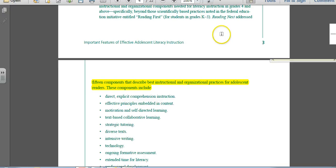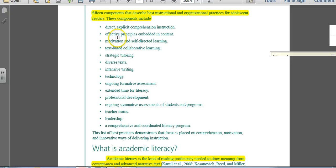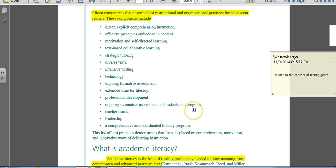Reading Next was a publication that was put out that addressed 15 components for instructional organization and practices for adolescent readers. These components included direct, explicit, and comprehension instruction, effective principles embedded in content, motivation and self-directed learning, text-based cooperative learning, strategic tutoring, diverse text, intensive writing, technology, ongoing formative assessment, extended time for literacy, professional development, ongoing summative assessments of students and programs, and teacher teams, leadership, and comprehensive and coordinated literacy programs.